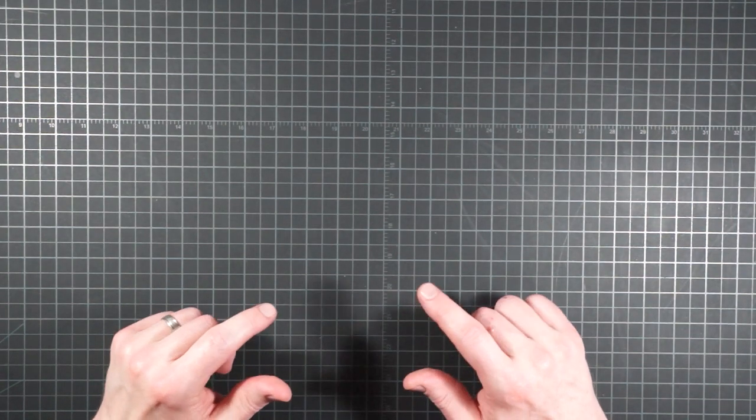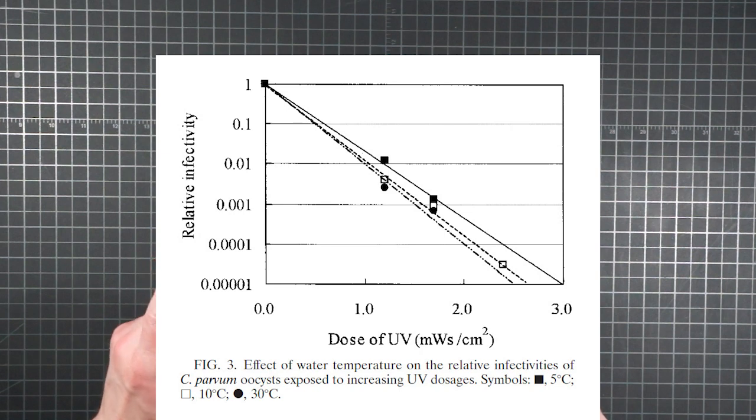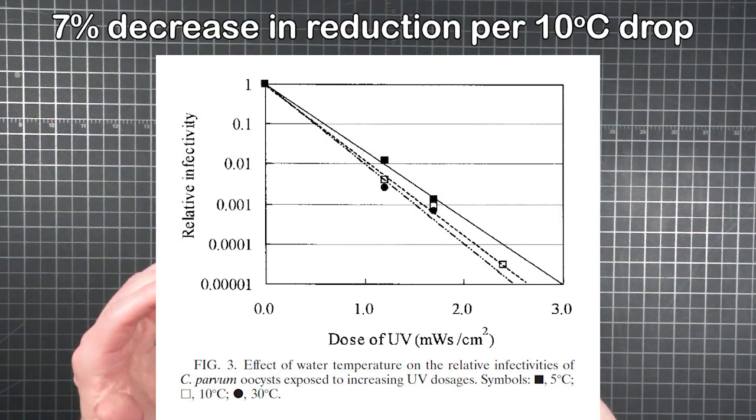Something else to be aware of was the study's findings on the effect of water temperature on performance. This graph shows the relative infectivity per dose plotted for 5 degrees Celsius, as well as 10 degrees and 30. It's not a huge difference, but if you wanted to account for it, the authors summarized the effect as a 7% decrease in infectivity reduction for every 10 degrees drop in water temperature.